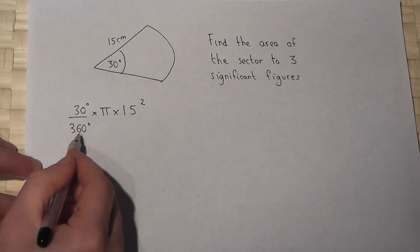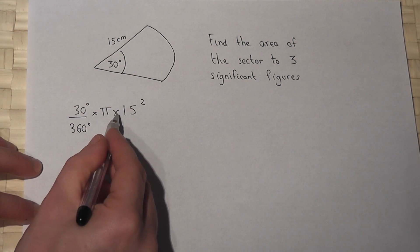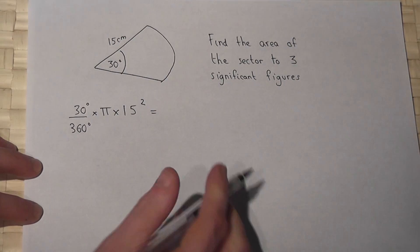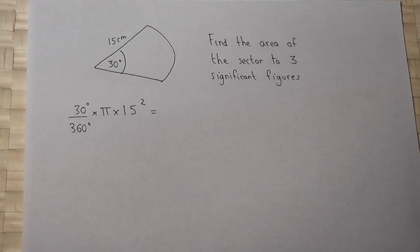So if I do 30 over 360 times pi times by 15 squared then it will work out the area of this sector. So here we go.